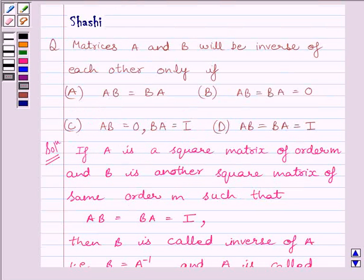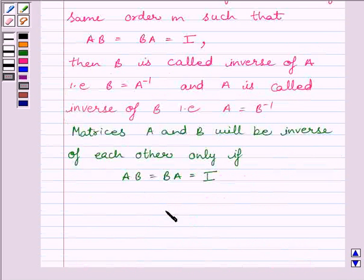So A and B will be inverse of each other only if AB equals BA equals I. Therefore, our correct answer is D, the required answer is D.